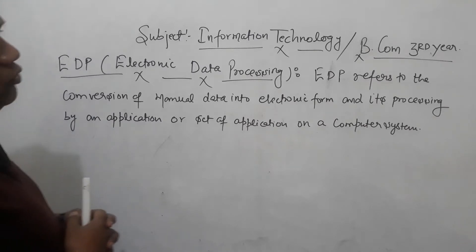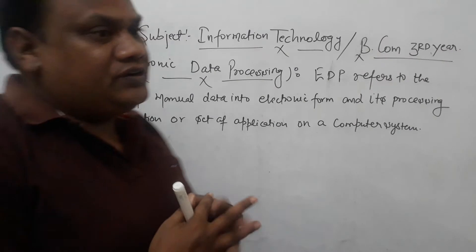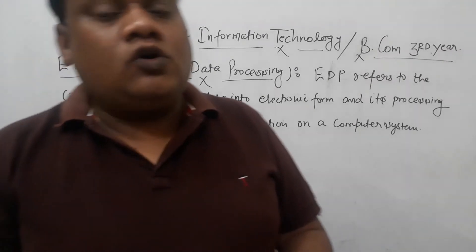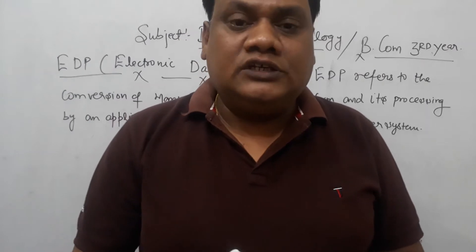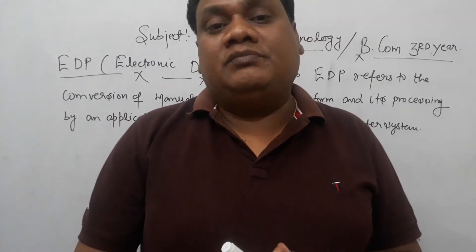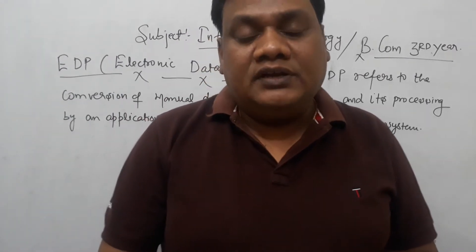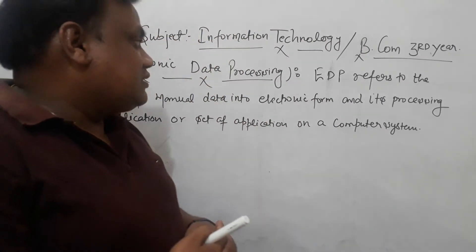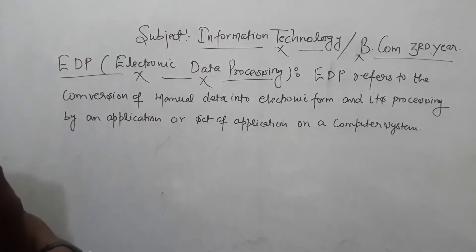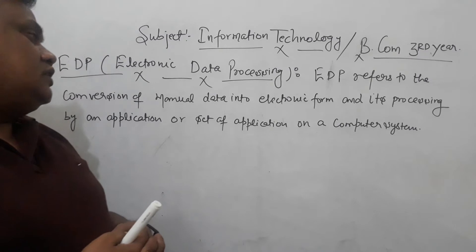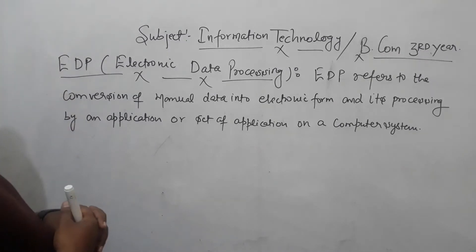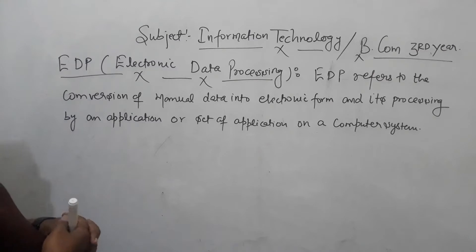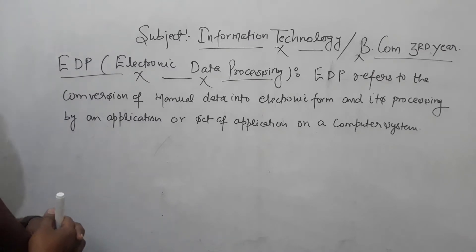Today we are going to cover EDP. Before this, we had covered the need and concept of information and its characteristics. That topic we completed in BCOM 3rd year. So in the second unit we have started, and we have already covered 2-3 topics. In sequence, today we are going to start the topic of Electronic Data Processing.